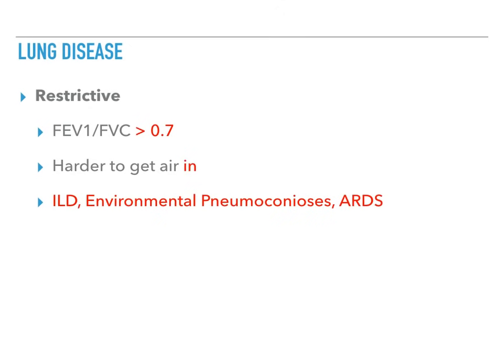Next, we have restrictive lung diseases. The FEV1 to FVC ratio is greater than 0.7. So in obstructive, it was decreased, but in restrictive, it's increased. In restrictive, it's harder to get air in, so it's harder to inhale than it is to exhale. In obstructive, it was harder to exhale, but in restrictive, harder to inhale.